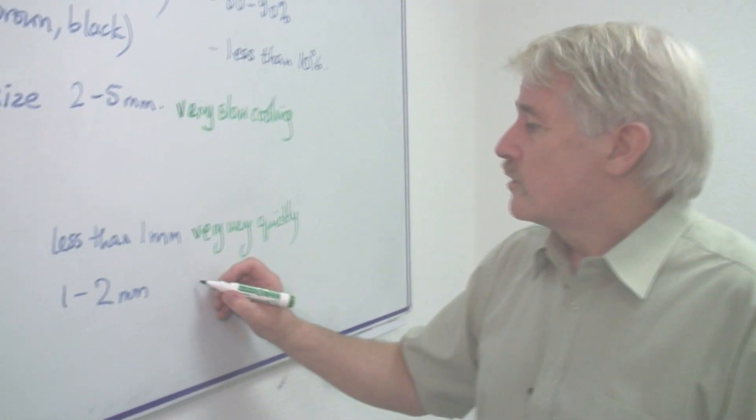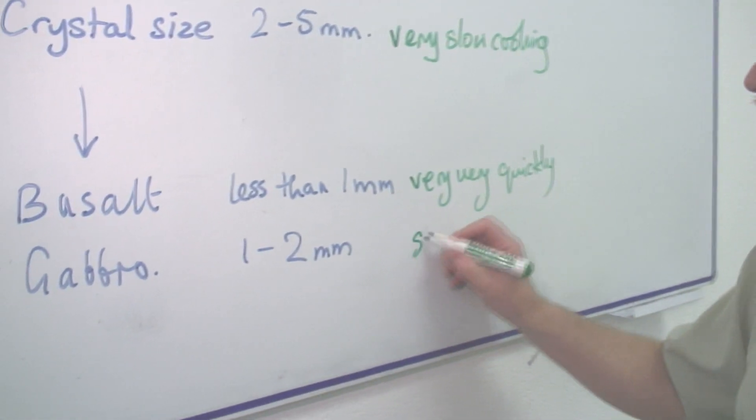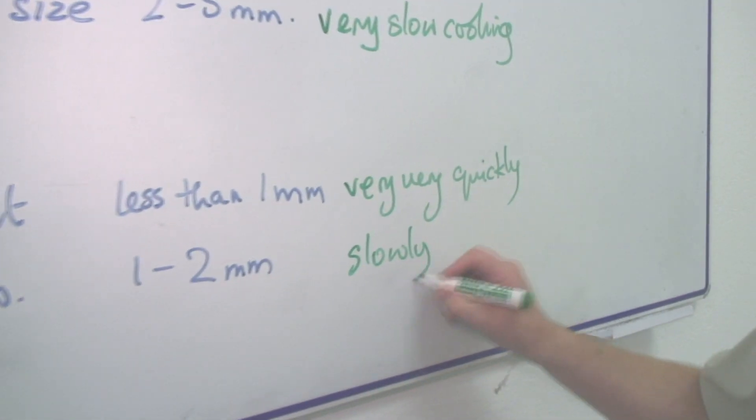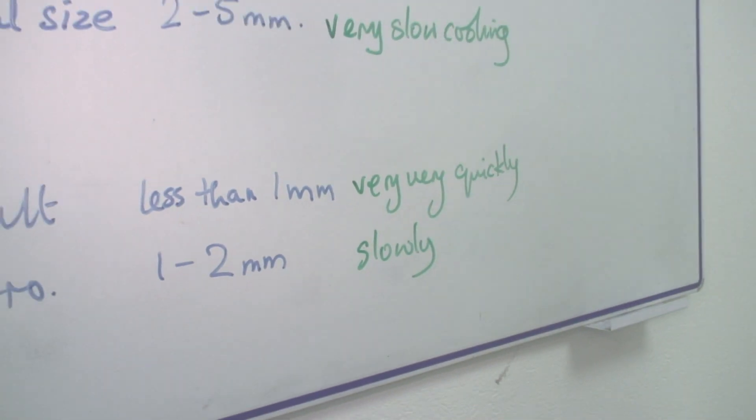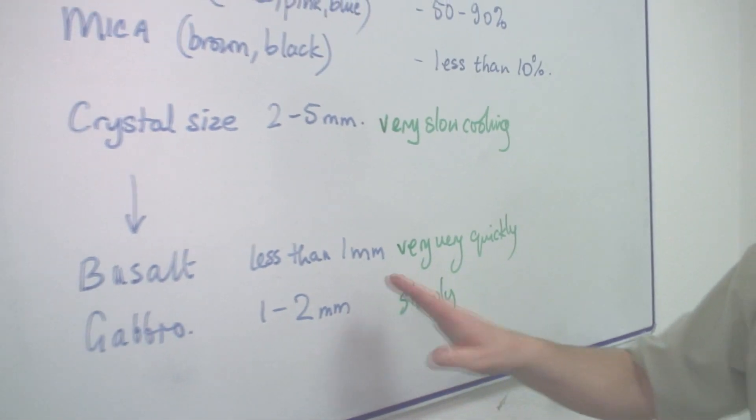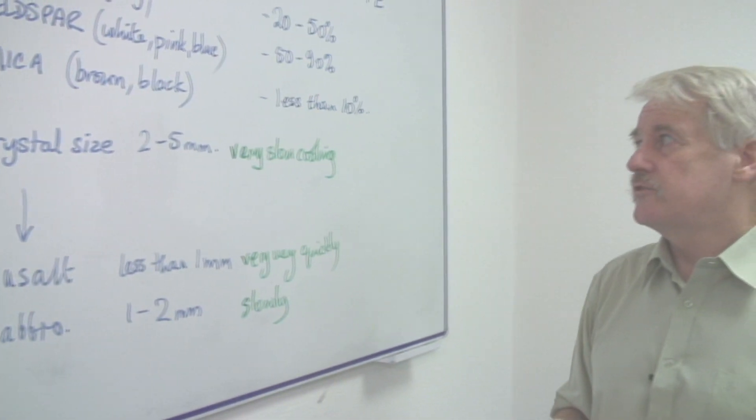Gabbro cooled just slowly. So it cooled quicker than granite but slower than basalt and therefore its crystals were smaller than those of granite.